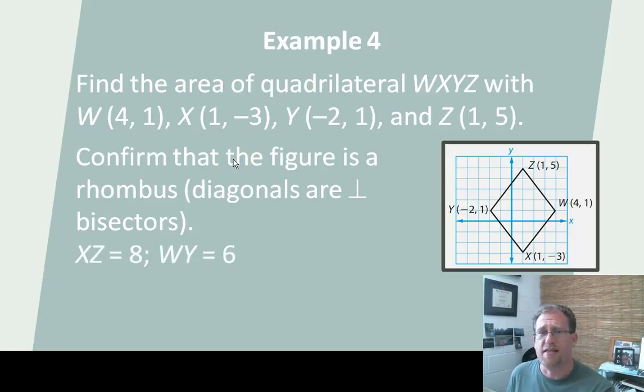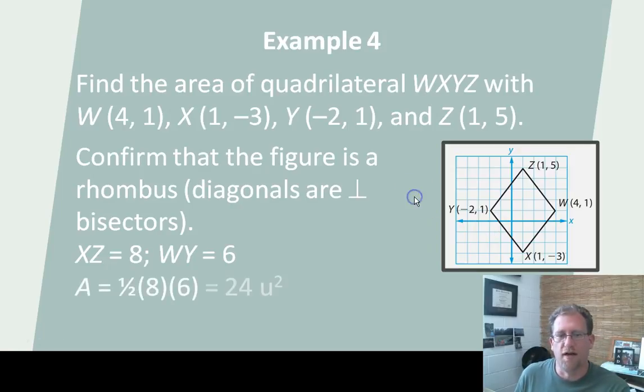Then we need to get the distances here. So XZ, this diagonal, has a distance of 8. And WY, this diagonal, has a distance of 6. And so we can see that we have 6 times 8 times one-half would give me an area of 24 square units. If you have any questions about that, let me know. And we'll deal with it tomorrow.